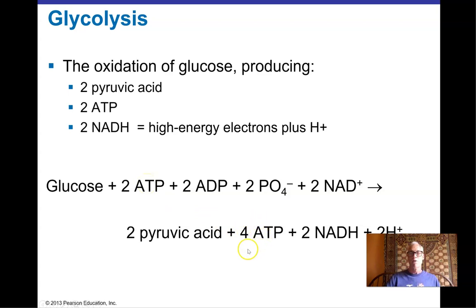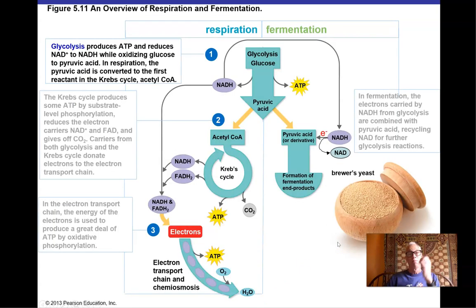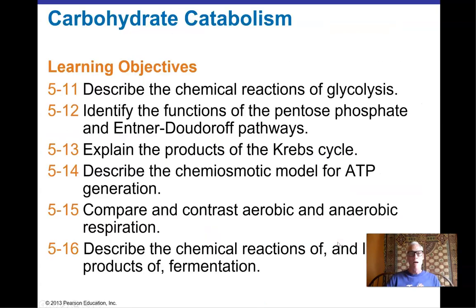When writing this reaction simply, people typically write: glucose + two ADP + two NAD⁺ → two pyruvic acids + two ATP + two NADH, leaving out the invested ATPs and assuming plenty of phosphate is available in the cell.